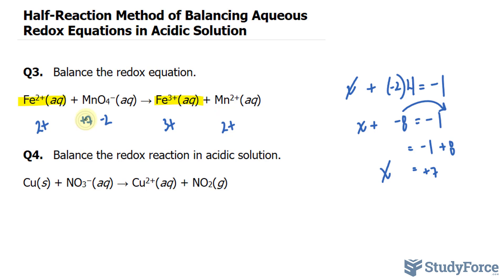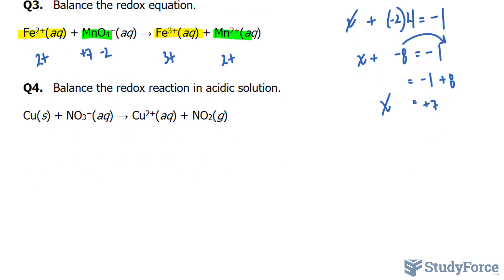For the reduction, Mn is going from an oxidation state of plus 7 to 2 plus. There's a reduction of charge, so this, what's being highlighted in green, is being reduced. So let's write that down.